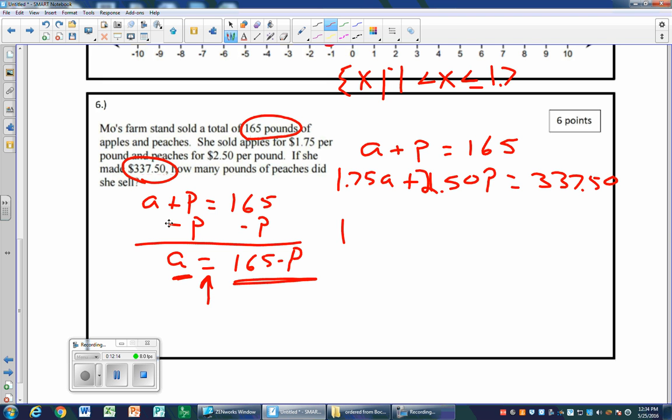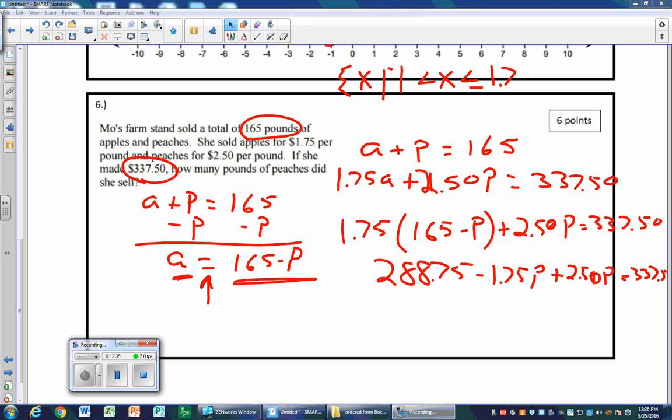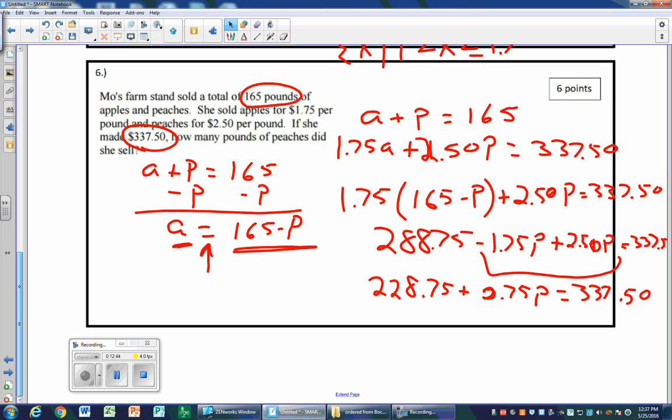Everywhere I see an a, I can write 165 minus p. Well, guess what? 1.75 is not an a, but the next thing is, so I write 165 minus p inside parentheses, plus 2.50p equals $337.50. Distribute and combine like terms. Now I'm going to combine the like terms.